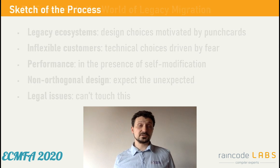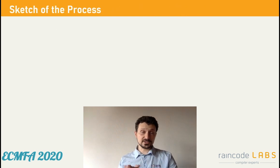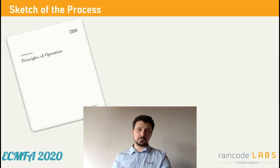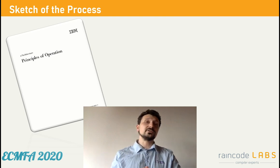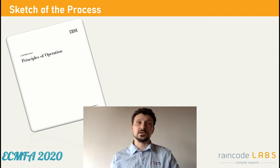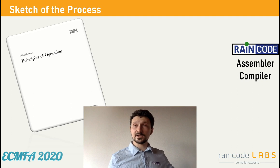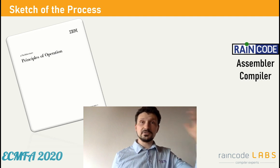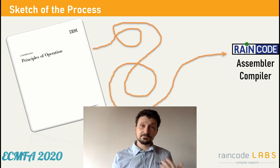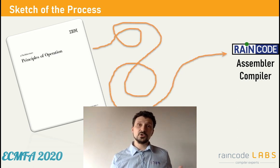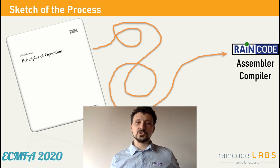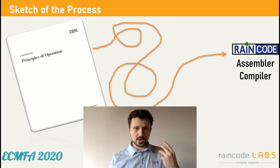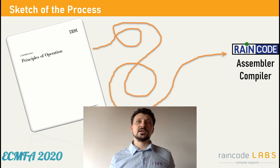The sketch of the process, how I wanted it to go, is I take this Principles of Operation that describes the instruction set of 952 instructions, and then I make a nice compiler out of it somehow. This paper is mostly about how this 'somehow' came into having several models, metamodels, languages, and whatnot.